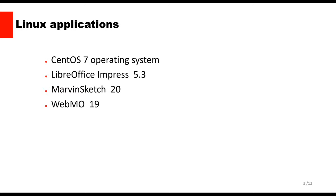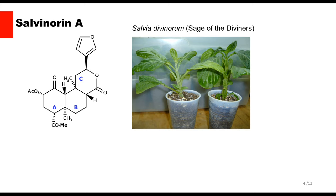These are the programs I'm using. The diterpene Salvinorin A is the most potent naturally occurring hallucinogen, and it is isolated from the Mexican Salvia divinorum plant.